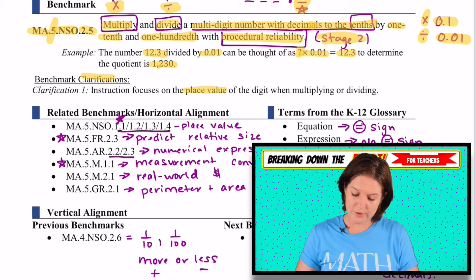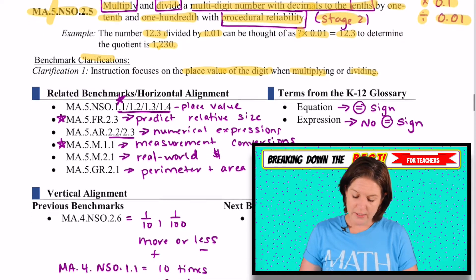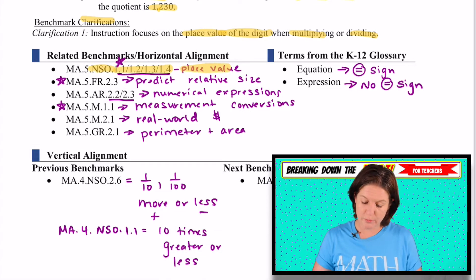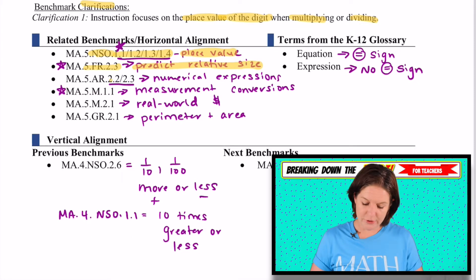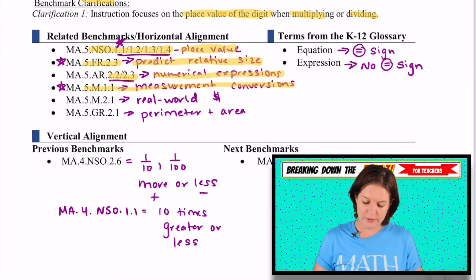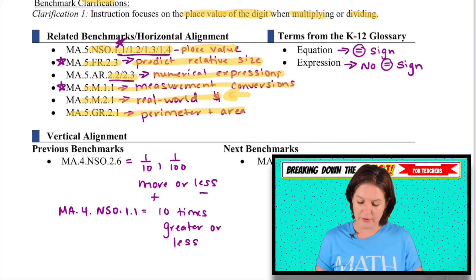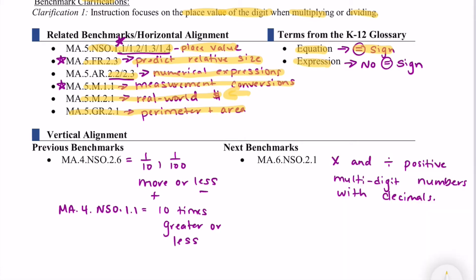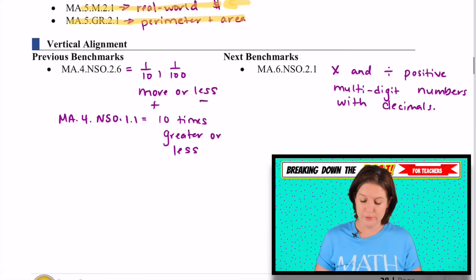This clarification is good. It tells us that we're focusing on place value of digits when we're multiplying or dividing. So there are a lot of related benchmarks here in fifth grade. These benchmarks in the NSO strand are your place value benchmarks. This fraction standard is where we're predicting the relative size of fractions. These algebraic reasoning standards focus on numerical expressions. Then we have measurement conversions, real world with money, and perimeter and area with fractions and decimals. You need to know that equation means that there's an equal sign present. There's two sides and they need to equal each other. And expression means that we do not have an equal sign present.